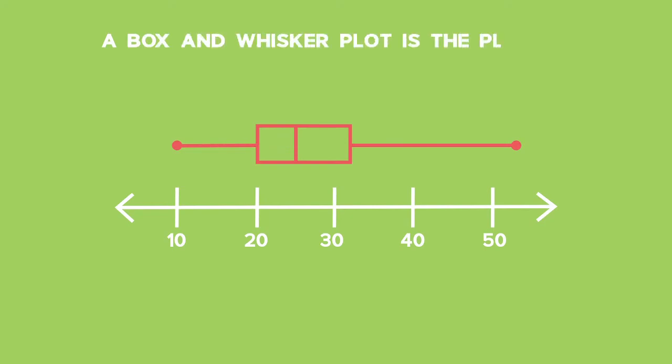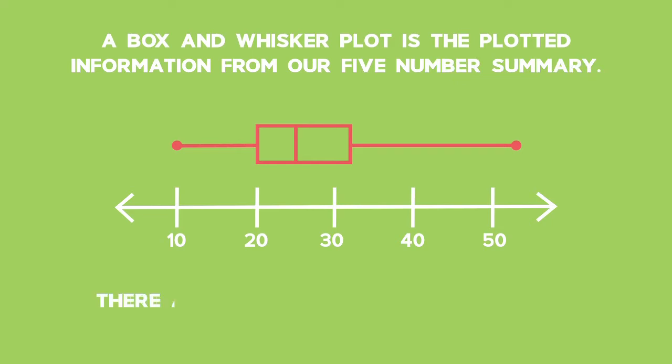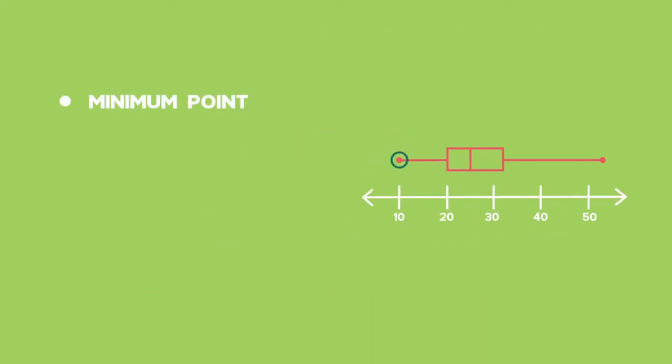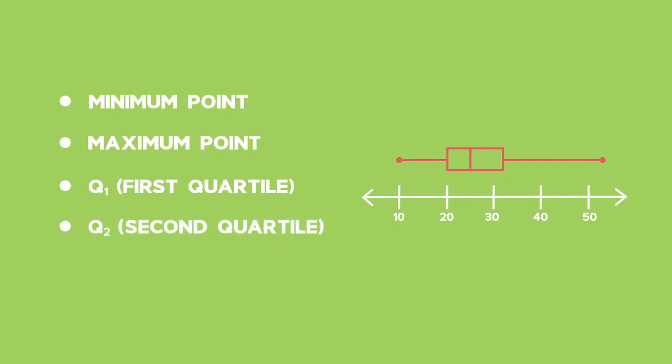A box-and-whisker plot is the plotted information from our five-number summary, so there are five different points that we need to plot. We need to plot our minimum point, our maximum point, as well as Q1, the first quartile, Q2, the second quartile, and our Q3, the third quartile value.